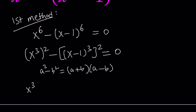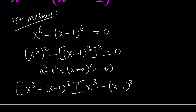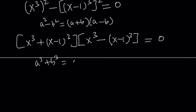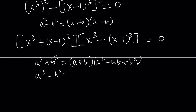So x cubed plus x minus 1 cubed is going to be one of the factors, and the other factor is the difference of these two terms, x cubed and x minus 1 quantity cubed. This gives us two factors. The first factor is a sum of two cubes, so we're going to use the sum of two cubes formula: a cubed plus b cubed equals a plus b times a squared minus ab plus b squared. The second is a difference of two cubes with a similar formula. Let's go ahead and apply those.